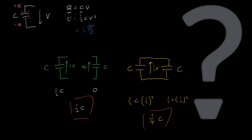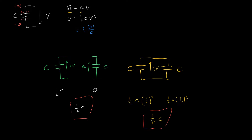What happened to the missing energy? Note that we get the same problem if we work just with charge and ignore voltage. In the configuration on the left I have charge Q on the left capacitor and zero on the right. After connecting, each has one half Q. Computing the energy: on the left it was one half Q squared on C, and on the right it is two times one half times one quarter Q squared on C, equal to one quarter Q squared on C.